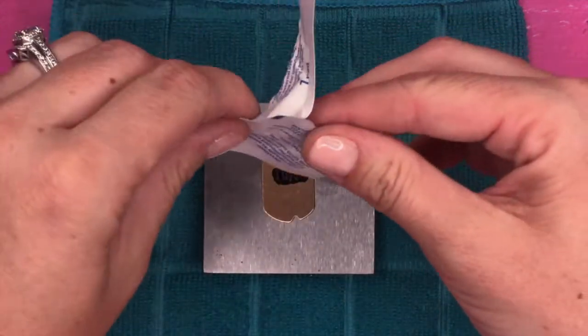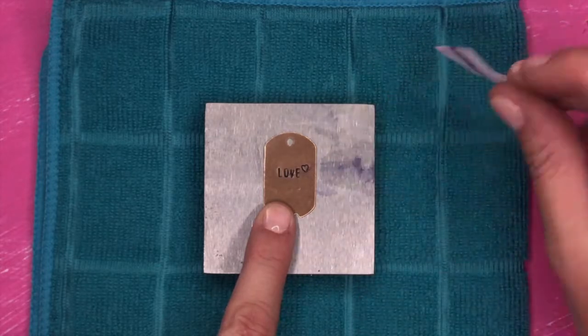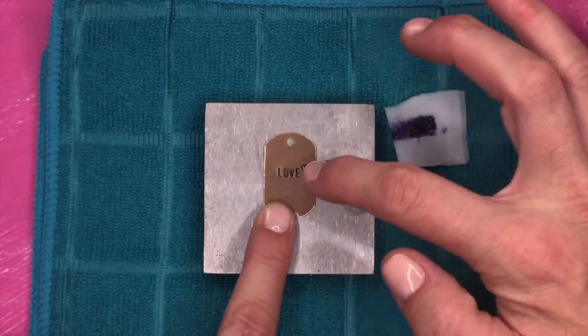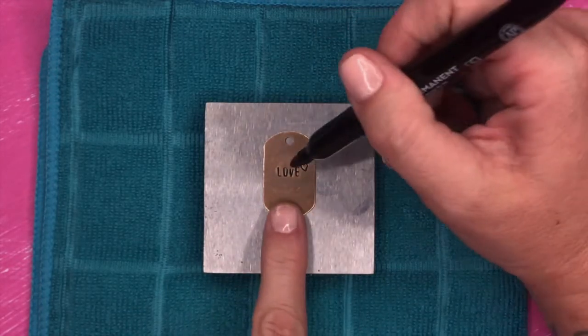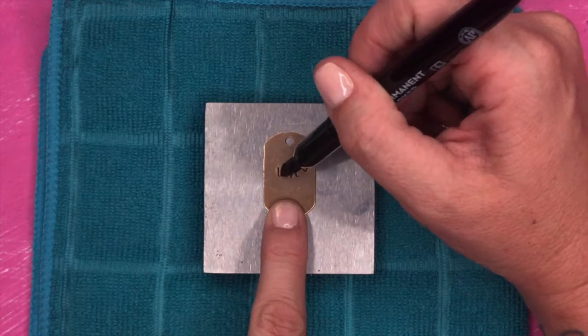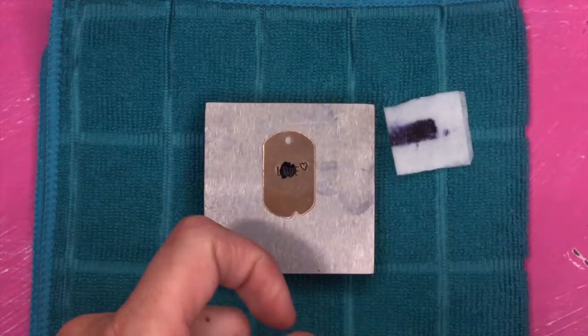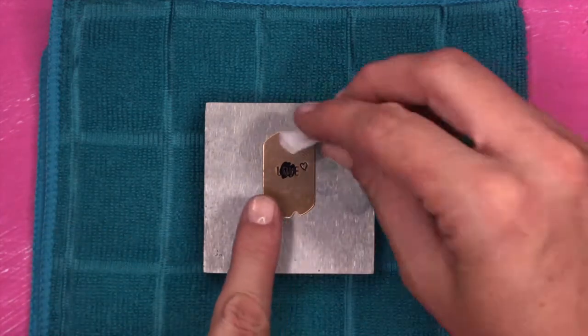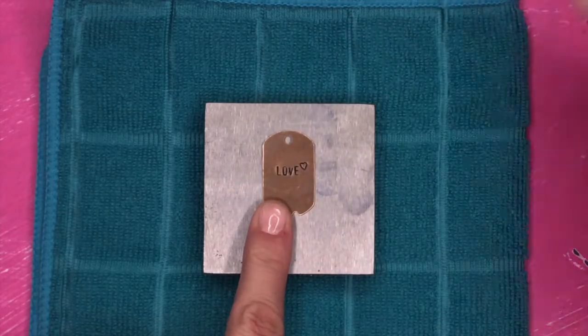You're going to use your alcohol wipe to wipe off the excess. You don't have to worry about staying in the lines. When you use your alcohol wipe, the marker comes off of everything except for your indentions. And you can see here I need to replace that a little bit at the top. That will change based on what you've stamped and how your impression looks. You may have to do the same thing. Just go over it again.